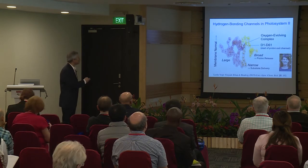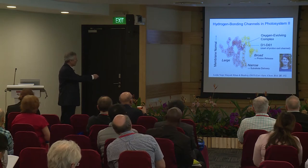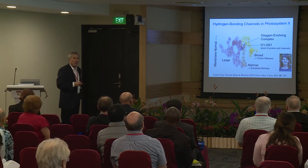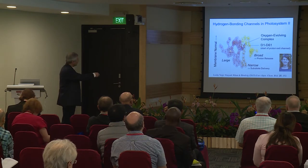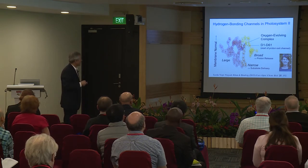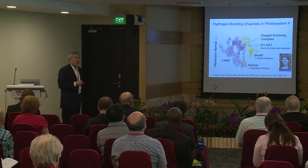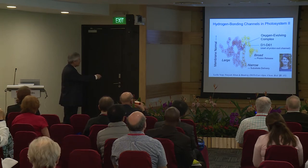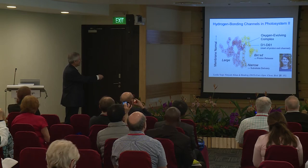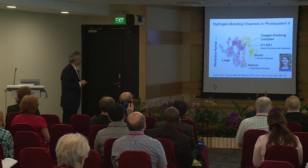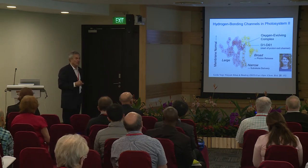So we're interested in those hydrogen bonding networks and how they might transport protons. Here's a picture generated by Leslie Vogt based on a QM/MM model of the structure. These little spheres are water molecules modeled in using QM/MM methods, and they largely reflect channels that had been identified by a number of other people including James Murray. These channels have been descriptively labeled large, narrow, and broad. We know some aspects of them but don't really know all the details of what they're doing yet.